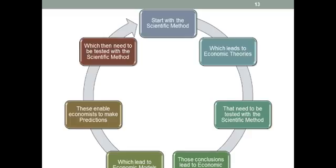So just to reiterate: we start with the scientific method, which gets us to theories. Those theories need to be tested. Those conclusions lead to economic principles, which then lead to an economic model. Those models allow economists to make predictions, and those predictions then need to be retested via the scientific method. Remember this — this is how economics works.